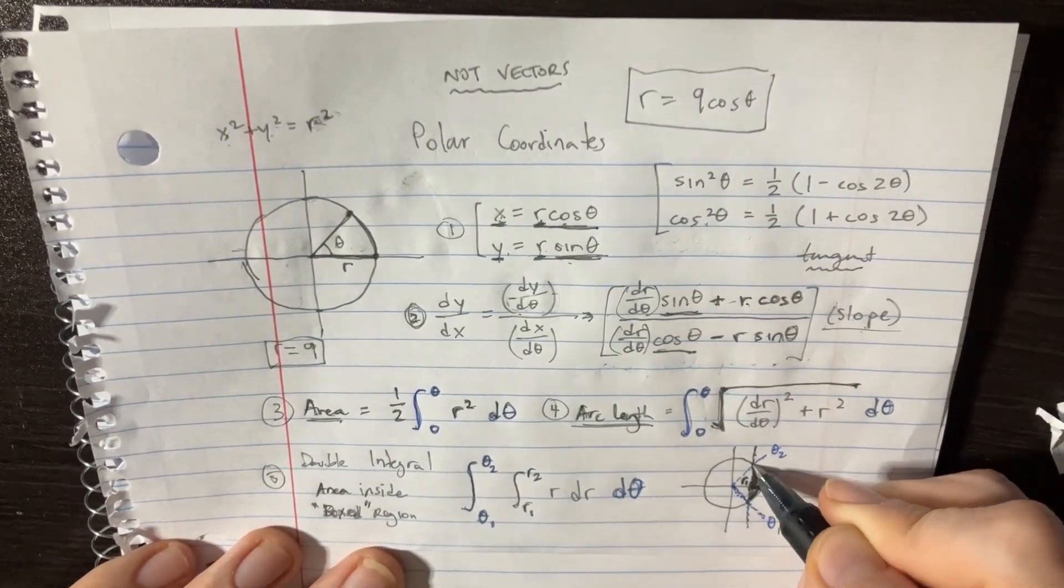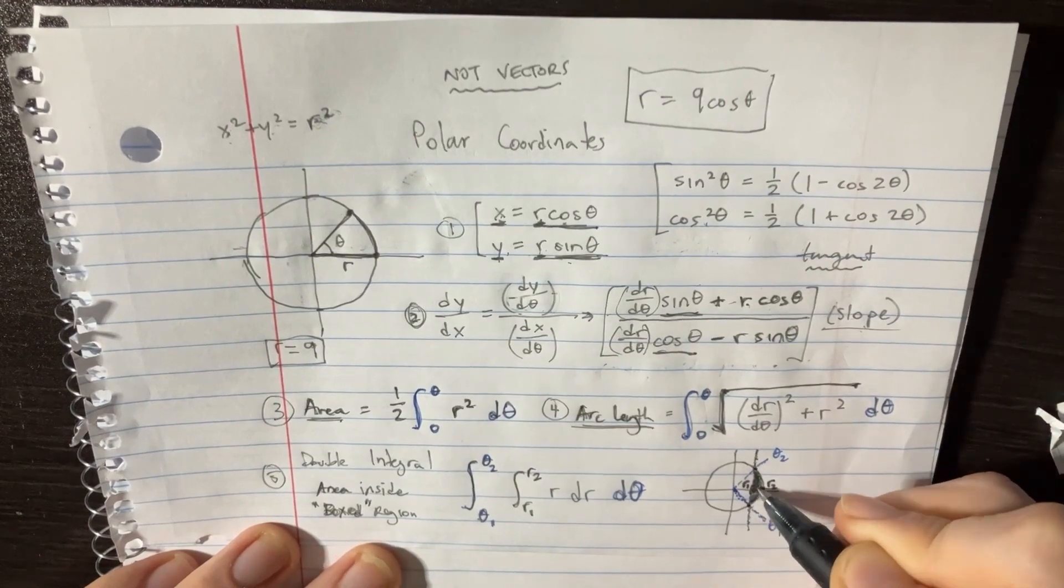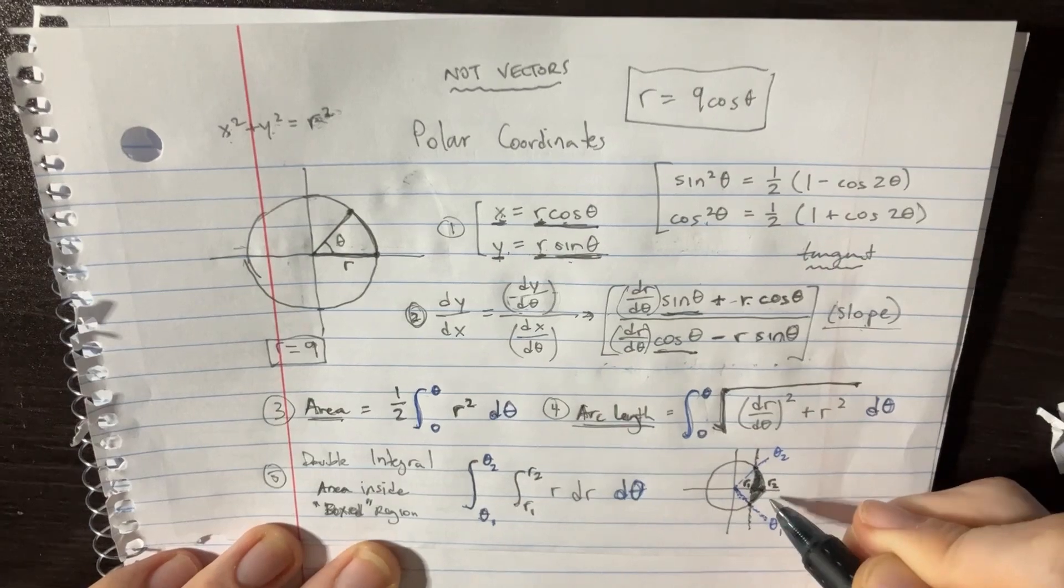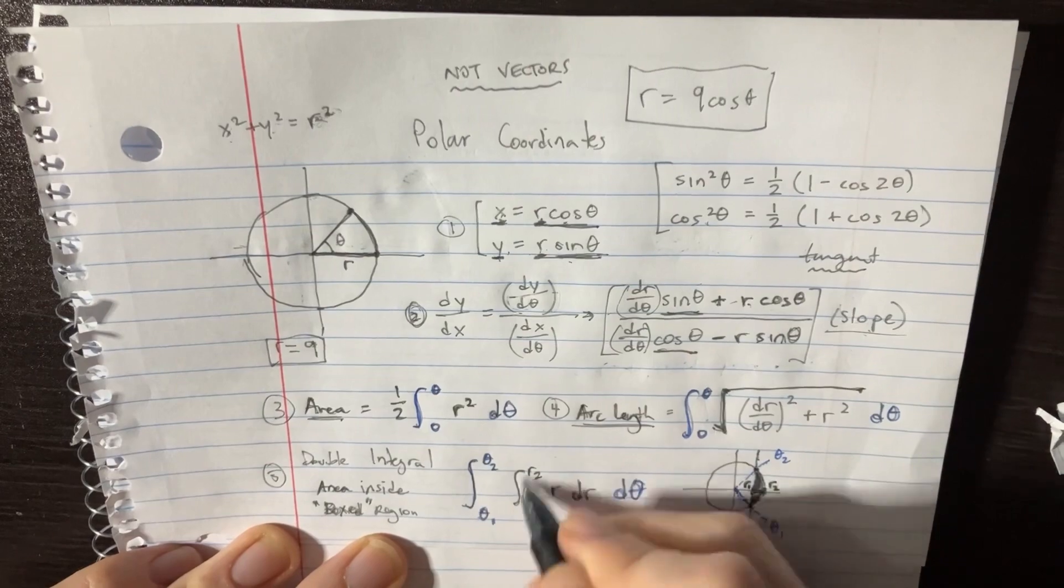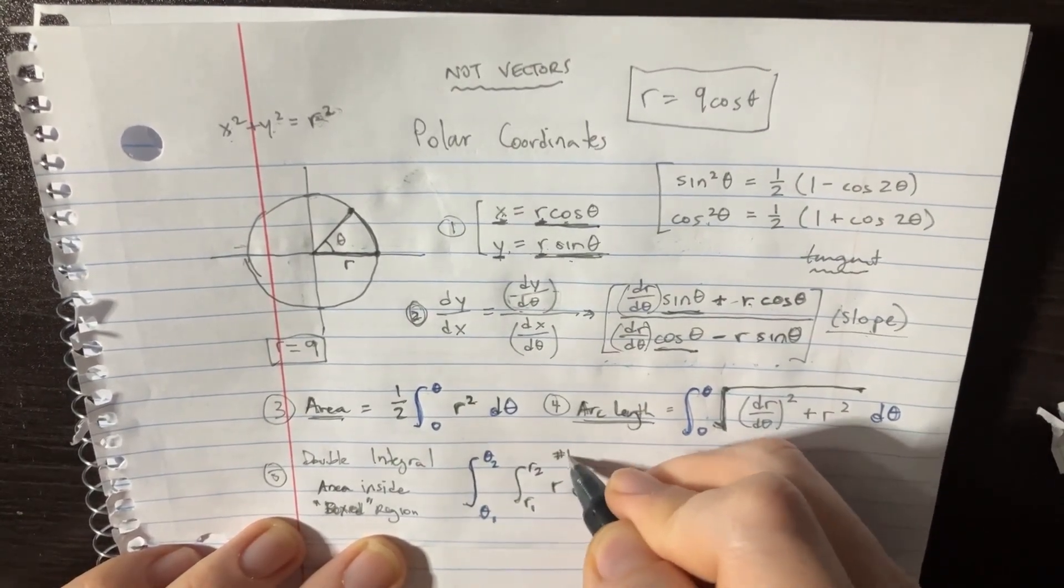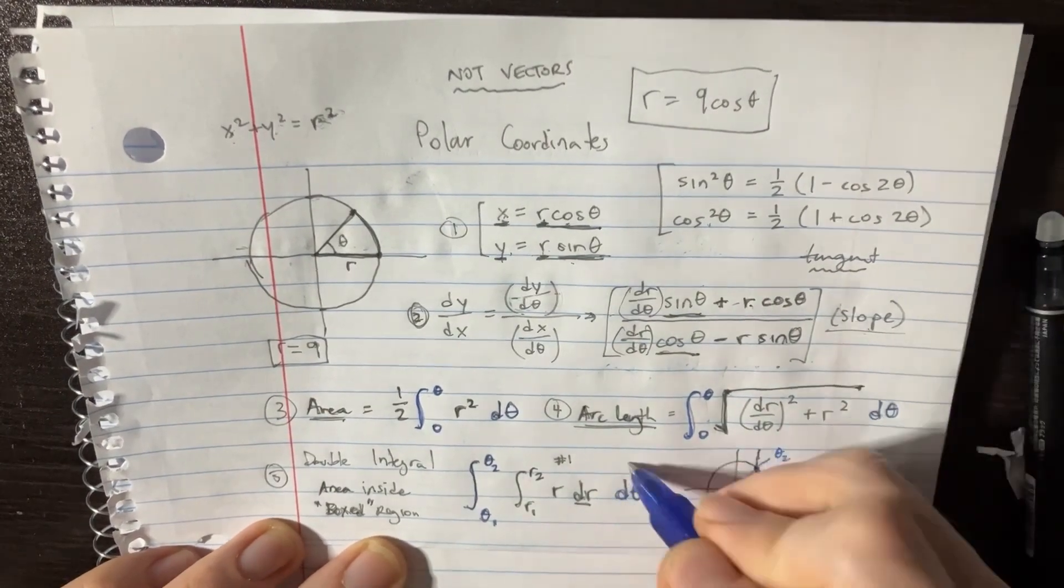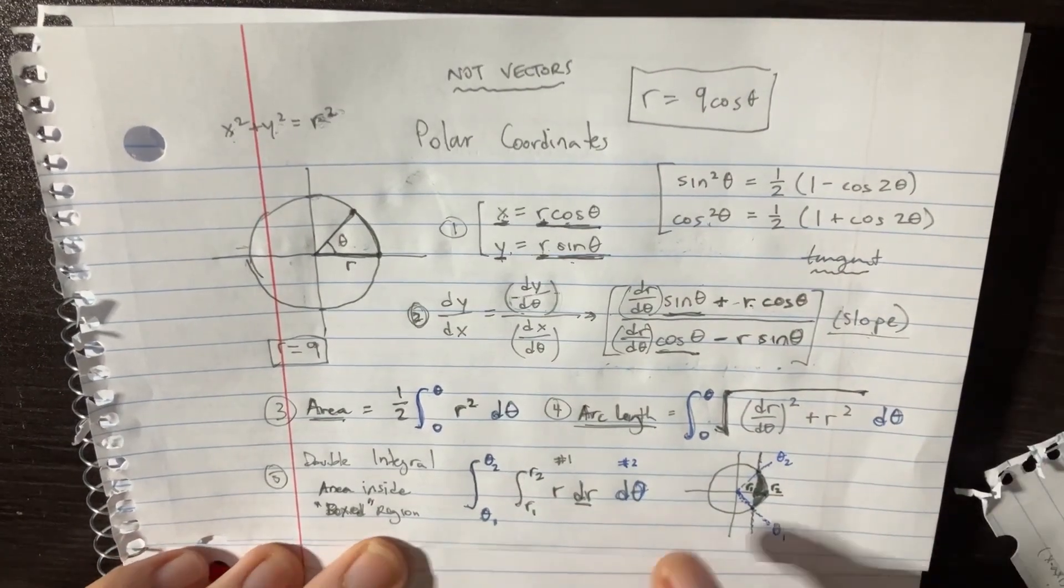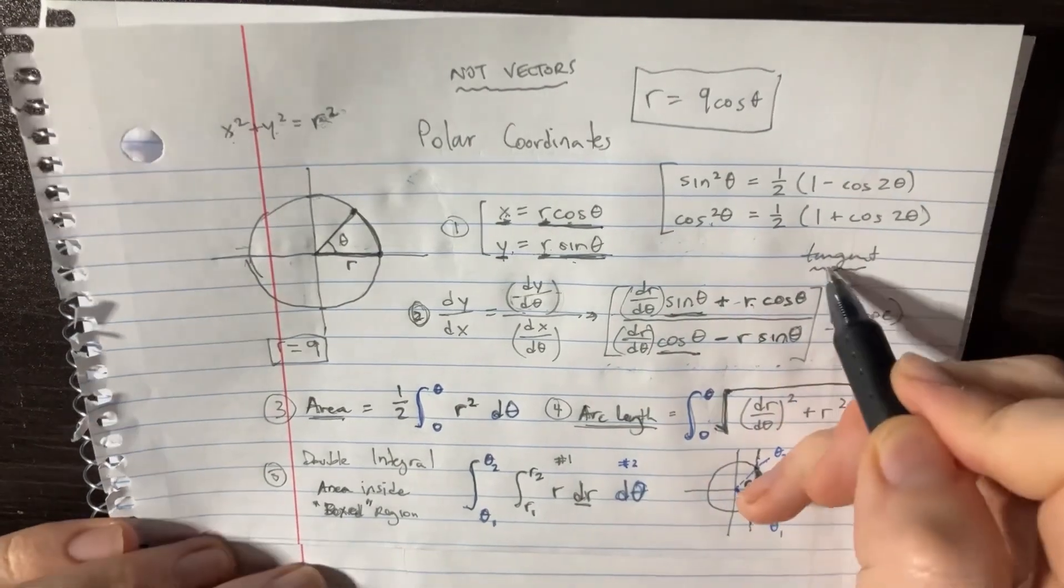So what you can do is box in this region by starting your integral from theta to theta and then also from r to r. If you box that in, it's just going to be r dr on the first one. Figure this out first, this integral comes first, number one. And then on the second one, you're just going to do this one. This one is number two. Then you finish this integral, and this should help you to sort of solve a whole bunch of different polar coordinate equations. You might be finding tangent lines, areas, arc lengths, or particular boxed regions.